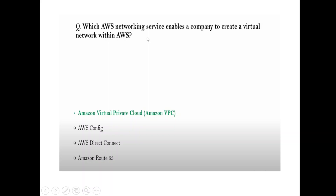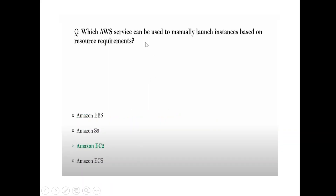Question: Which AWS networking service enables a company to create a virtual network within AWS? Answer: Amazon VPC — Virtual Private Cloud. Question: Which AWS service can be used to manually launch instances based on resource requirements? Answer: Amazon EC2.